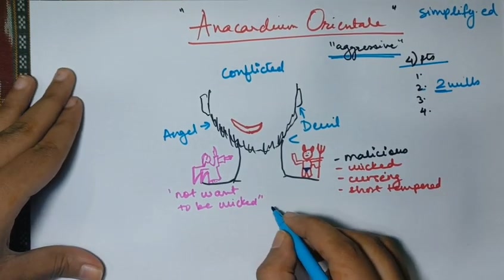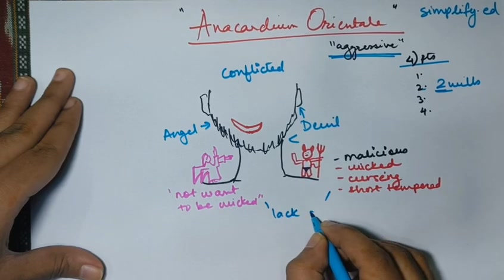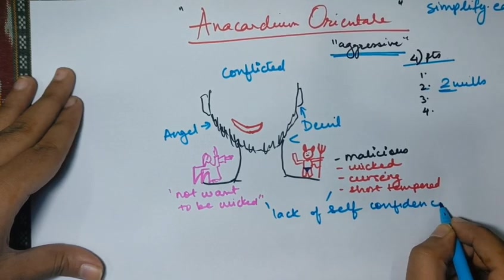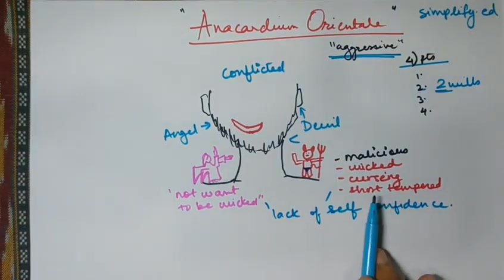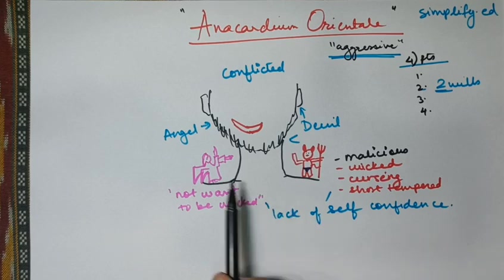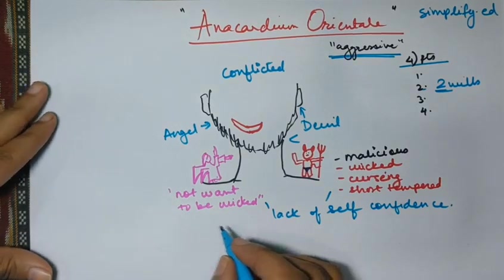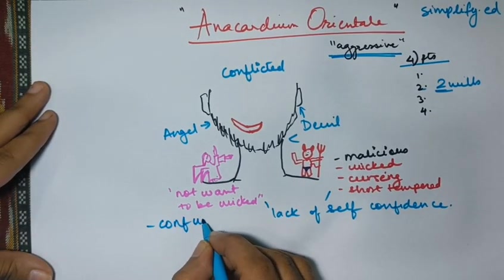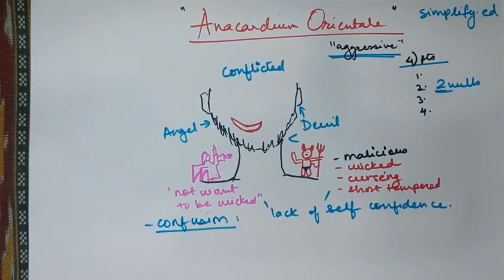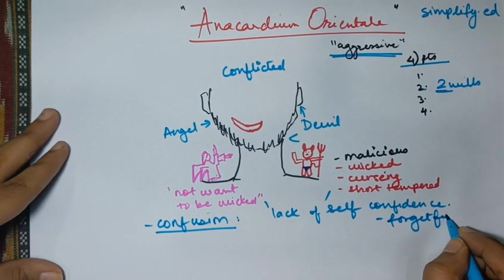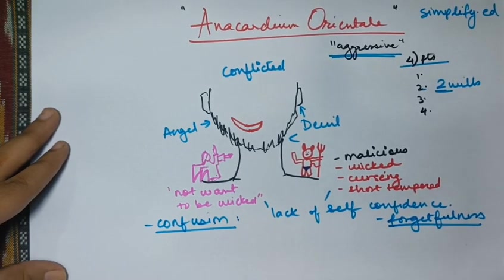Now since there is going to be two wills, there is going to be lack of self-confidence. Because now this guy doesn't know what to do and what is the right thing to do. Even after committing something, like suppose he is short-tempered, he shouted on a person and now because this angel was always there, he is going to regret what he said and he is not going to be able to trust himself well. This again is going to create a lot of confusion for him. Like confusion and another thing which it will create is forgetfulness.